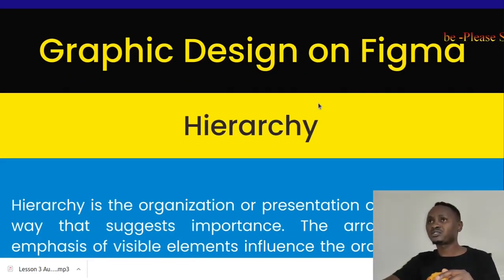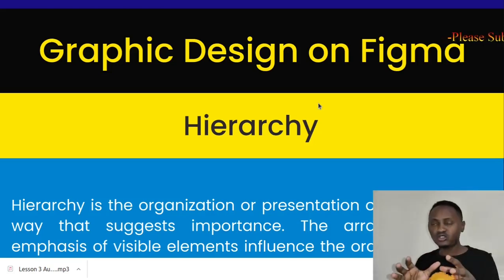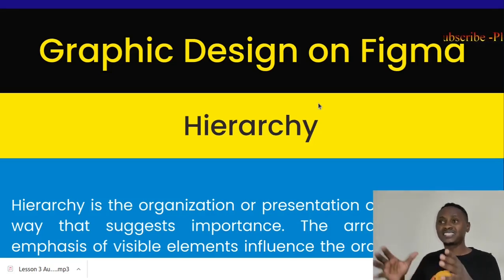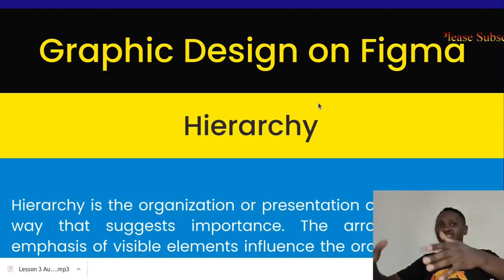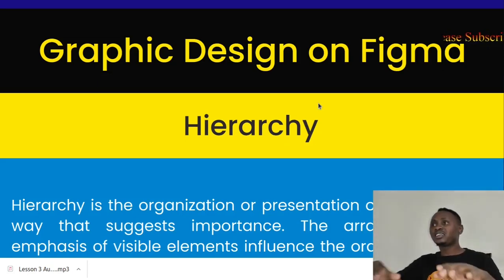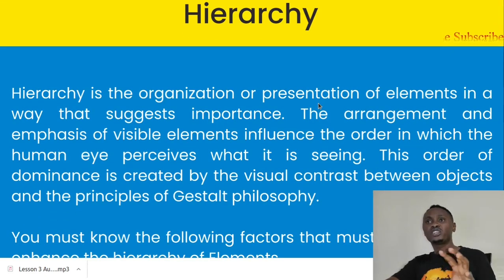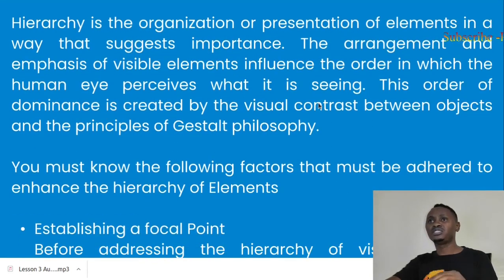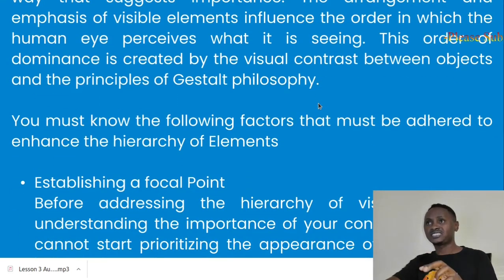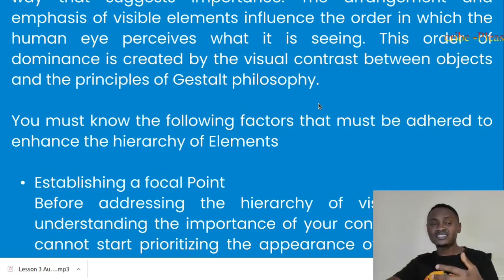When we talk of consistency, we must look at the harmony, regularity, and steadiness of your content — they have to follow a certain flow so the user's eyes can connect from one point to the next. The other thing we are going to talk about is hierarchy. Hierarchy is the organization or presentation of elements in a way that suggests importance. The arrangement and emphasis of visible elements influence the order in which the human eye perceives what it sees. This order of dominance is created by visual contrast between objects and the principles of Gestalt.